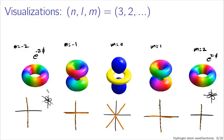I suggest you go and look at pictures from the chemist's perspective if you're curious — you probably have a chemistry textbook or can find pictures online quite easily. In physics, we're not afraid of complex numbers, and we end up with these circular shapes for the nonzero values of m in our spherical harmonics.